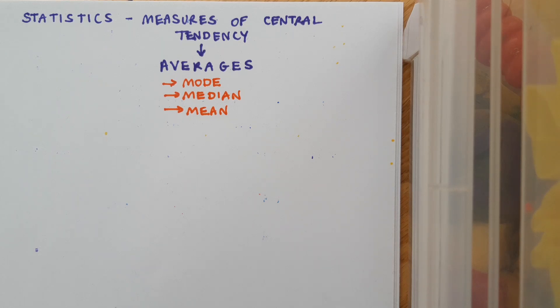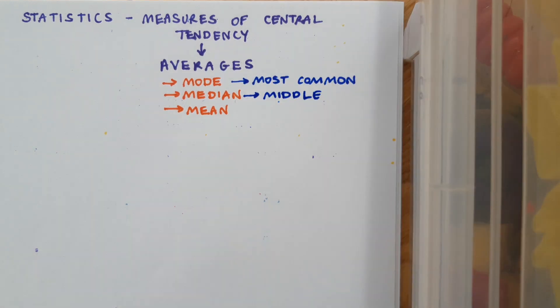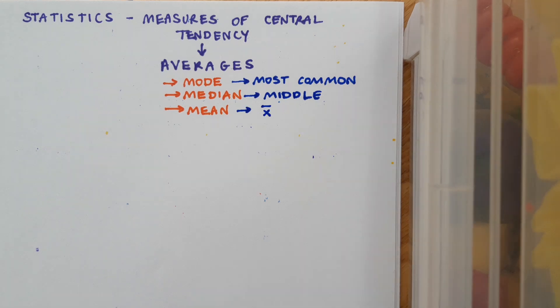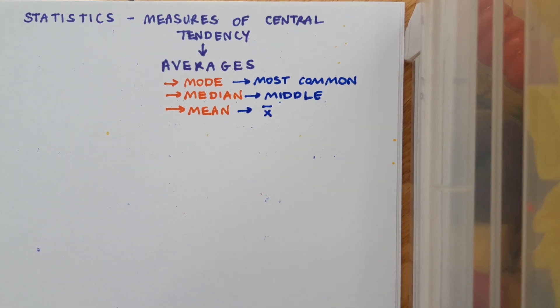The mode is the most common piece of data. The median is the middle piece of data. And the mean is what we would traditionally call the average, and it can also get called x-bar. So we're going to look now how to find each of these three things.